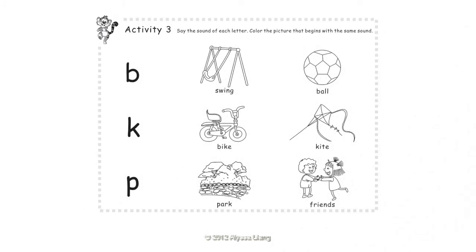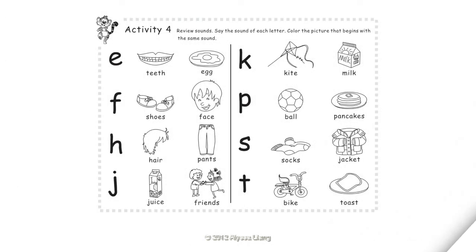Activity 3: Say the sound of each letter. Color the picture that begins with the same sound. B — Ball. K — Kite. P — Park.